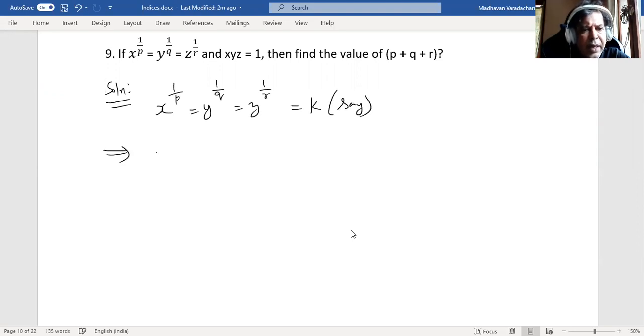That means individually, I can write it as x to the power of 1 by p is equal to k. That means if I want to only x, what should I do? I should take to the power of p on both sides. So this p will get cancelled on the left side, 1 by p times p. That means you will have x is equal to k to the power of p.